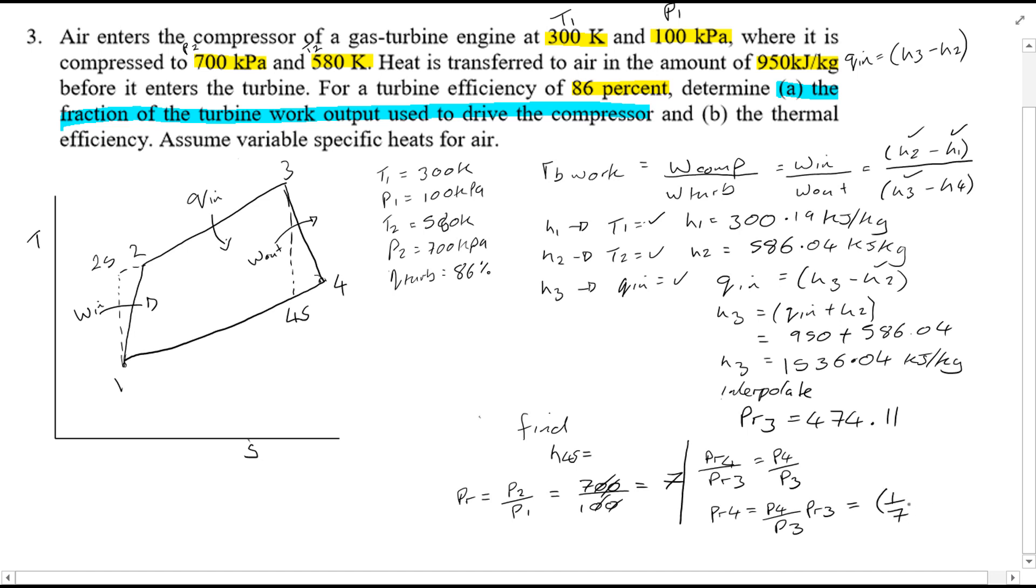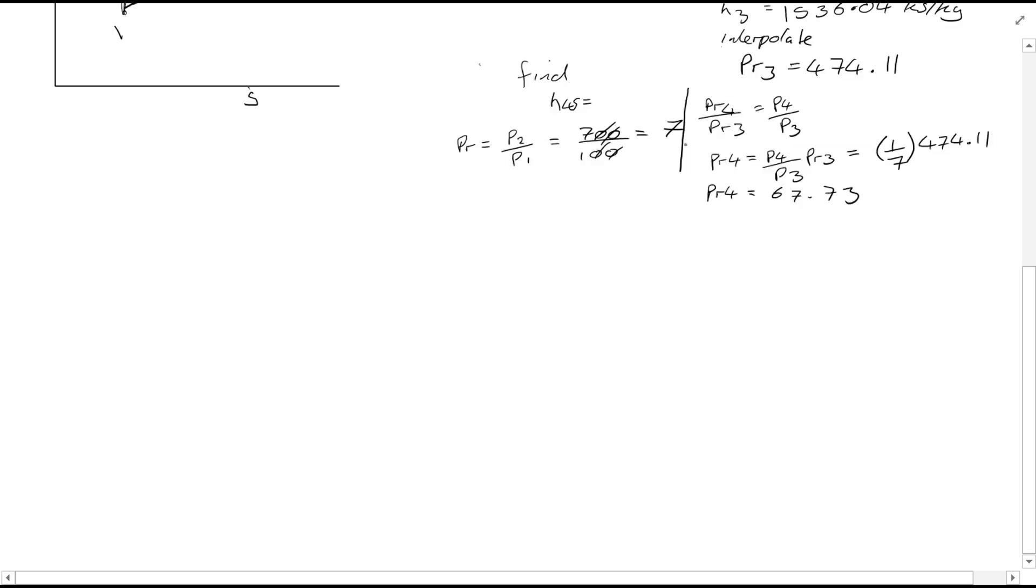Which is equal to 1 over 7. Of course think of your PV diagram for this cycle. 1 over 7 times 474.11, which we previously just calculated, and that will give you a value of PR4 equal to 67.73. Now of course from this, you can now interpolate, and you'll find the value of H4S equal to 905.83 kJ per kg.